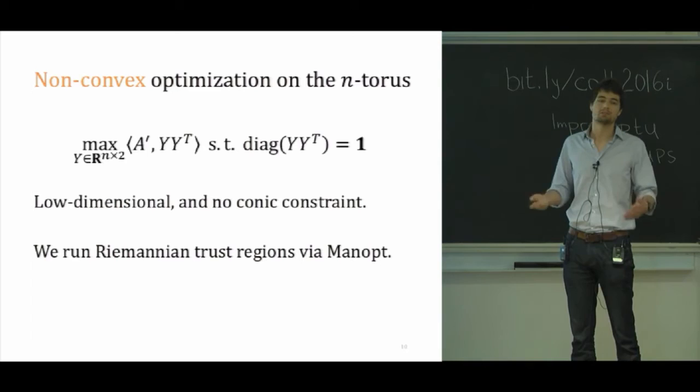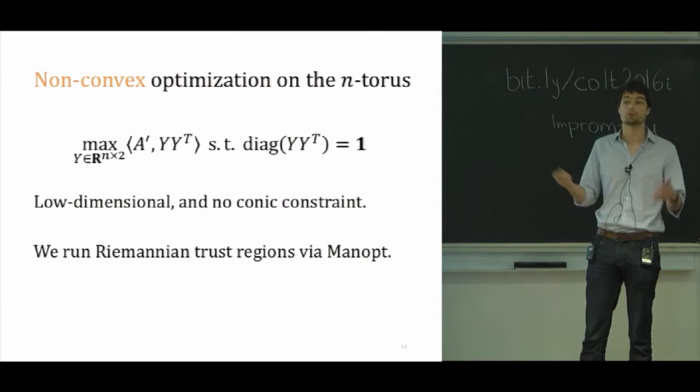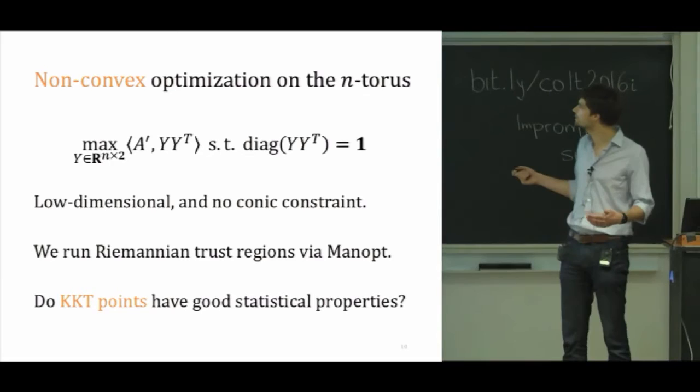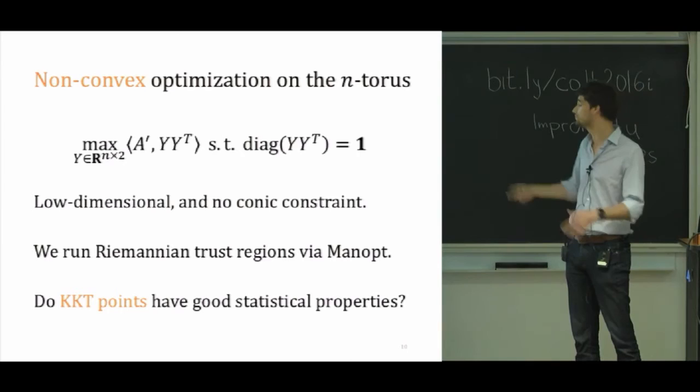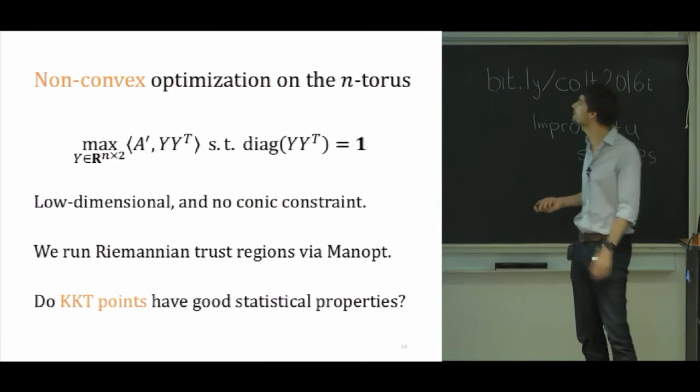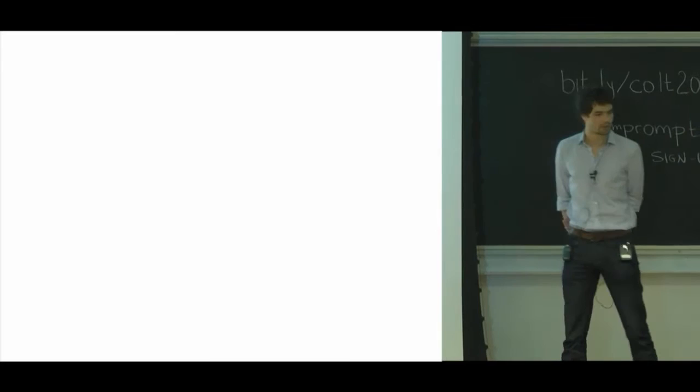But of course, this is a non-convex task. So in general, these optimization methods, they can only guarantee that you'll go to KKT points or maybe second-order KKT points. And the question then is, are these KKT points relevant for the statistical task at hand? So I'm not going to try to argue that we can solve this non-convex problem to global optimality. That's not what I'm interested in. I will try to, the point I will make is that KKT points, points which satisfy necessary optimality conditions for this problem, are statistically relevant. And that's all I care about for this question that I'm looking at.